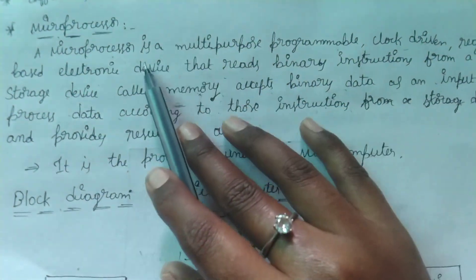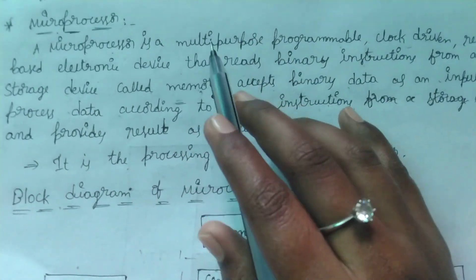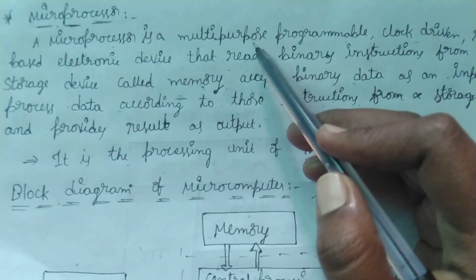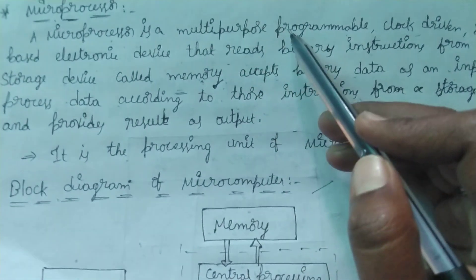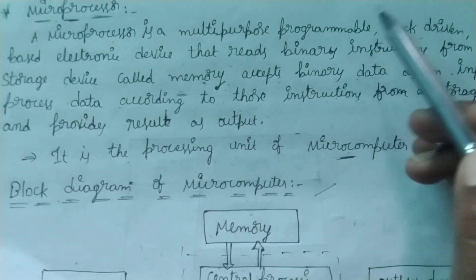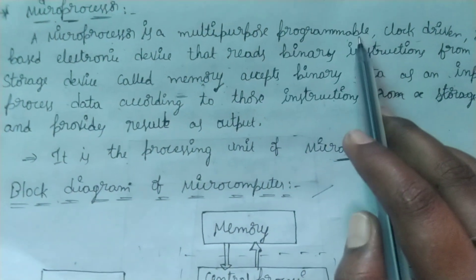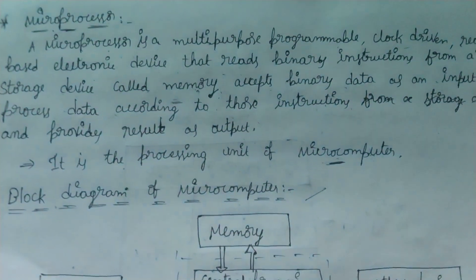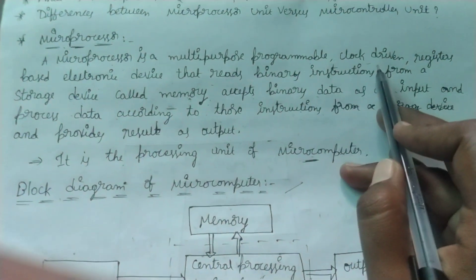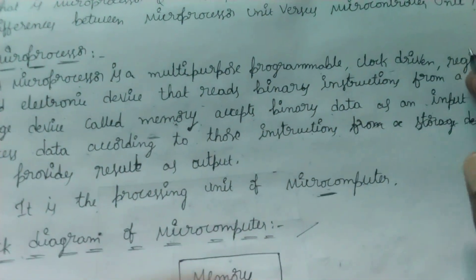What is the microprocessor? This microprocessor is multi-purpose. The microprocessor is called multi-purpose programmable and clock-driven.